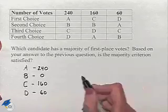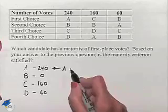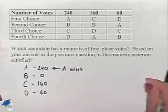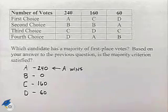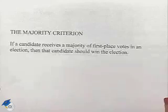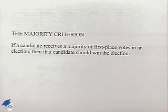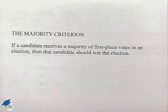So if we were just looking at plurality, A would be the winner. Now let's look at the majority criterion. The majority criterion states that if a candidate receives a majority of first place votes in an election, then that candidate should win the election.